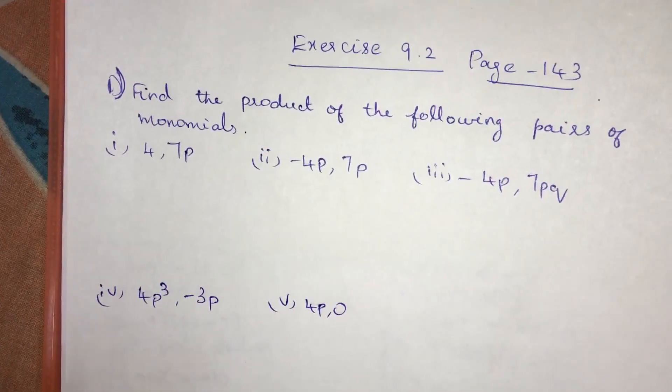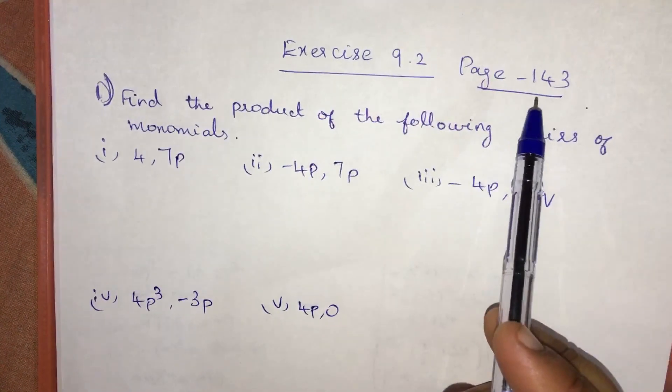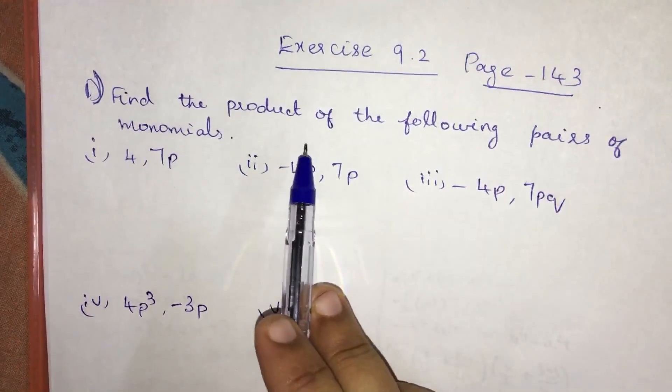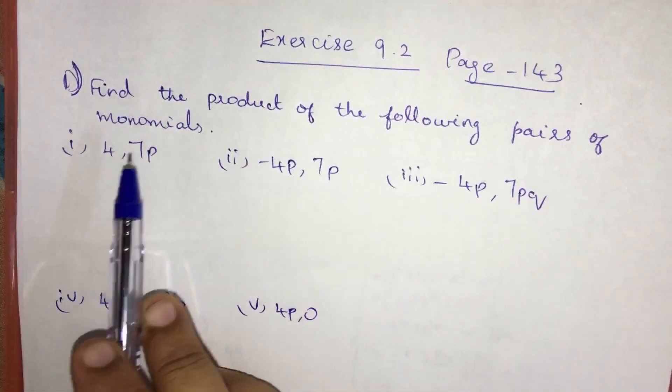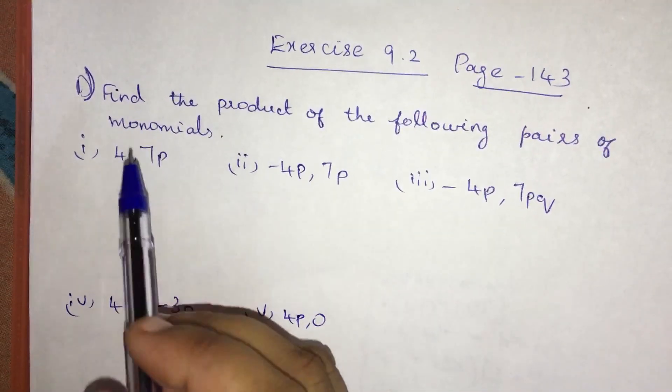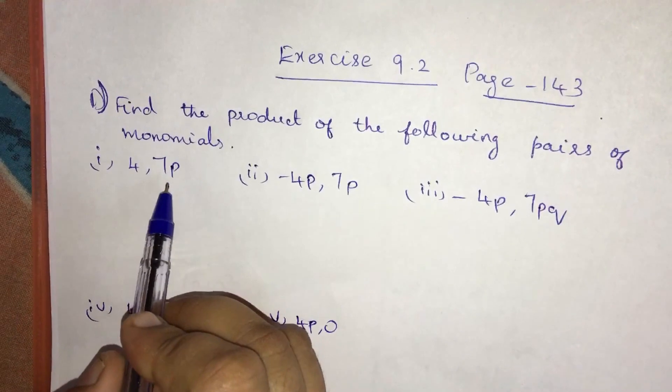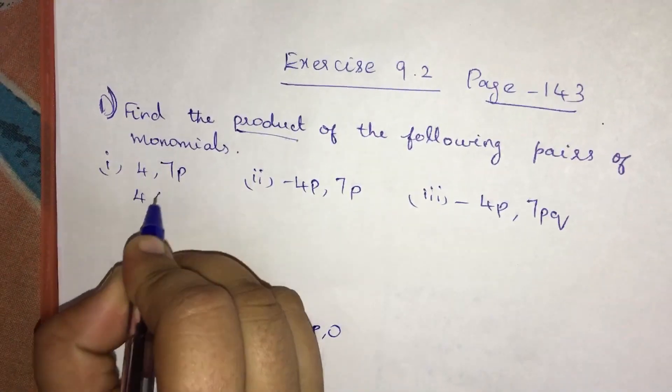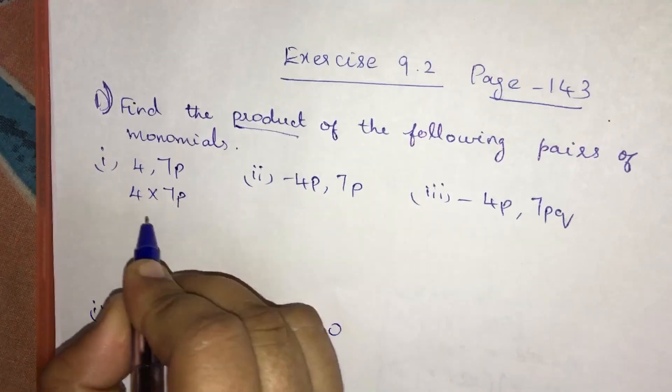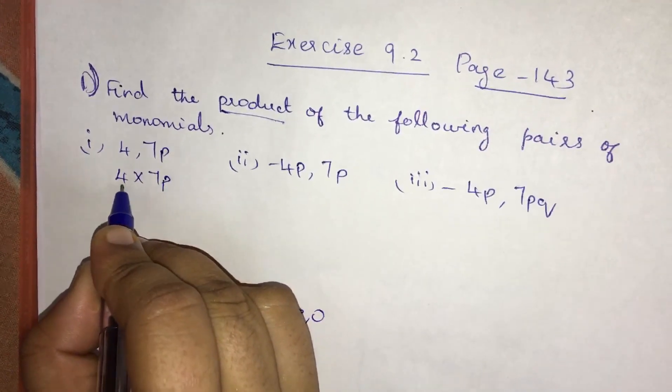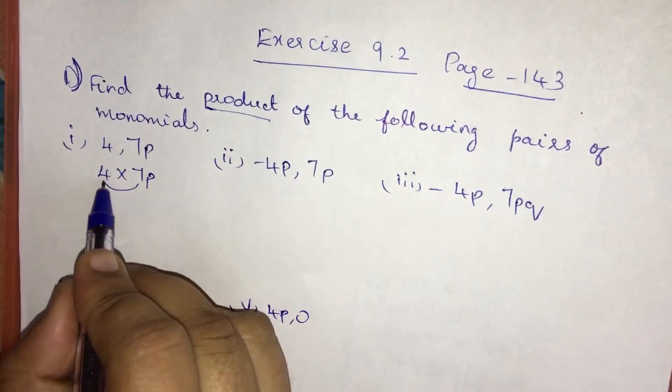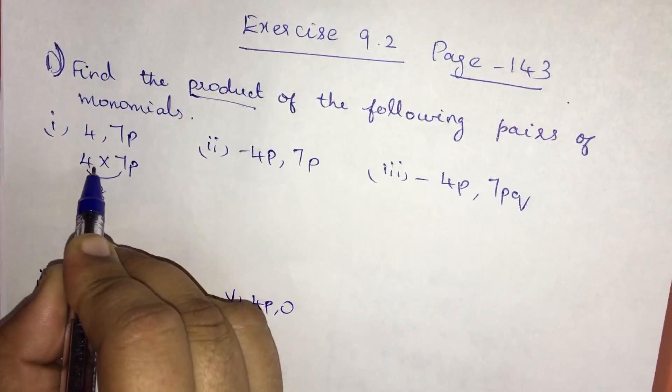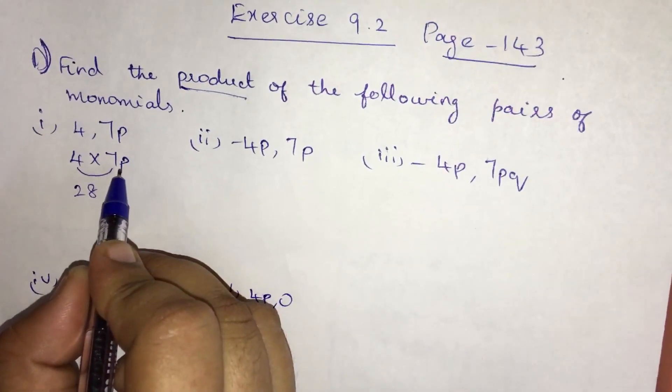Hi, exercise 9.2, page number 143, question number 1. Find the product of the following pairs of monomials. First: 4 comma 7p. Now we have to find a product. 4 into 7p. First we have to multiply the numbers: 4 into 7 is 28, and multiply the variables.